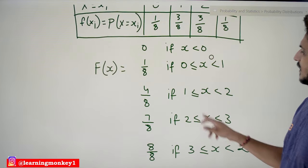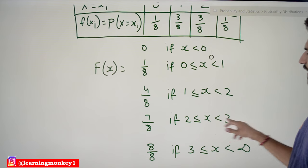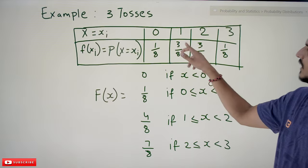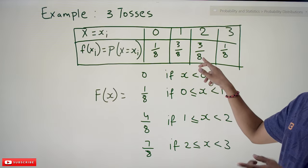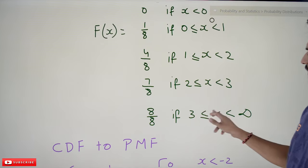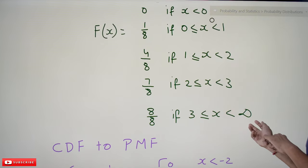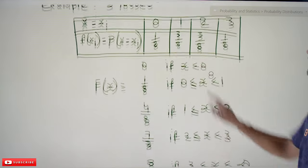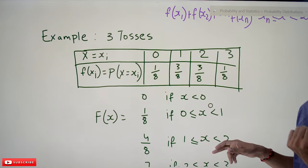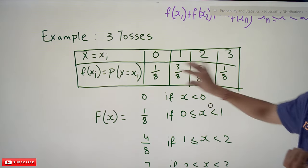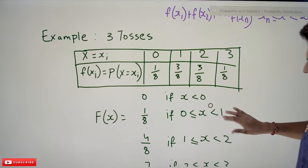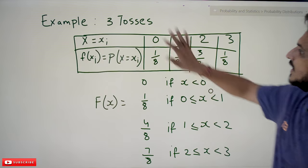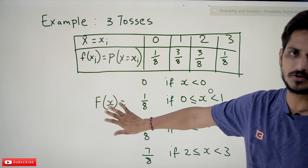Similarly, F(x) = 7/8 if 2 ≤ x < 3, because 1/8 + 3/8 + 3/8 = 7/8. And F(x) = 1 if 3 ≤ x < ∞, because 1/8 + 3/8 + 3/8 + 1/8 = 8/8 = 1. The summation of all probabilities must equal 1 — this point we already discussed in the previous class on probability mass function. This is how we convert a given probability mass function into a cumulative distribution function.